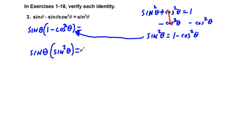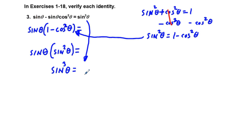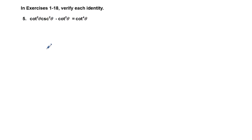Sine theta times sine squared theta is sine cubed theta, and that equals what we bring down from the right side — sine cubed theta. Check. Problem number 3 is worked out.